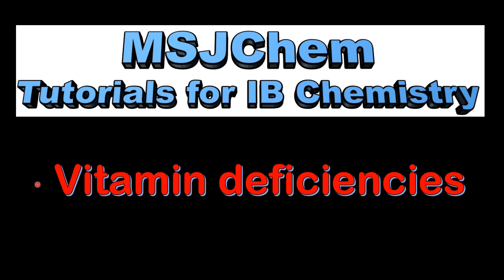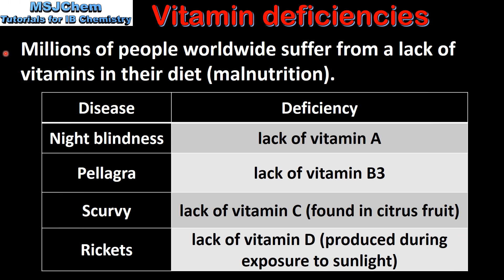This is MSJChem. In this video I'll be looking at vitamin deficiencies. Millions of people worldwide suffer from a lack of vitamins in their diet, which is a form of malnutrition. Although students are not required to know details about specific diseases, we'll look at some examples of diseases caused by vitamin deficiencies.